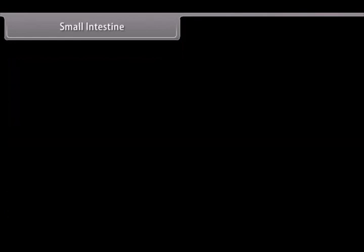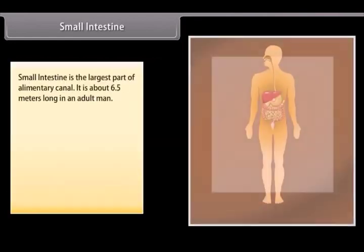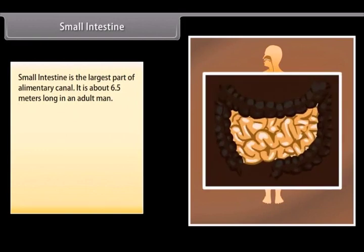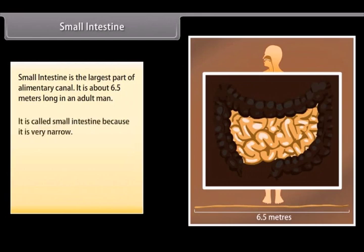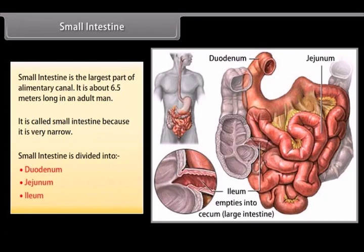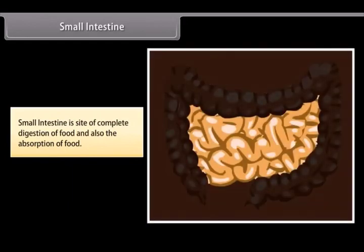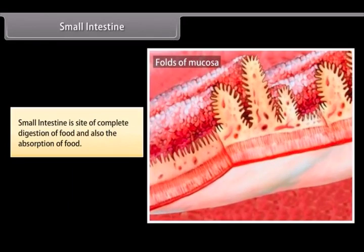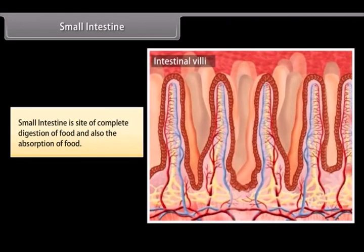Small intestine is the largest part of the alimentary canal. It is about 6.5 meters long in an adult man and is called small intestine because it is very narrow. It is divided into duodenum, jejunum and ileum. Small intestine is the site of complete digestion of food and also the absorption of food.